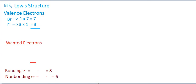They're both in that seventh column, so they both have seven valence electrons. There's one bromine, so one times seven equals seven. There's five fluorines, so five times seven gives me 35. If I add these up, I get 42 total valence electrons. That's a lot. We're going to be drawing a lot of dots.